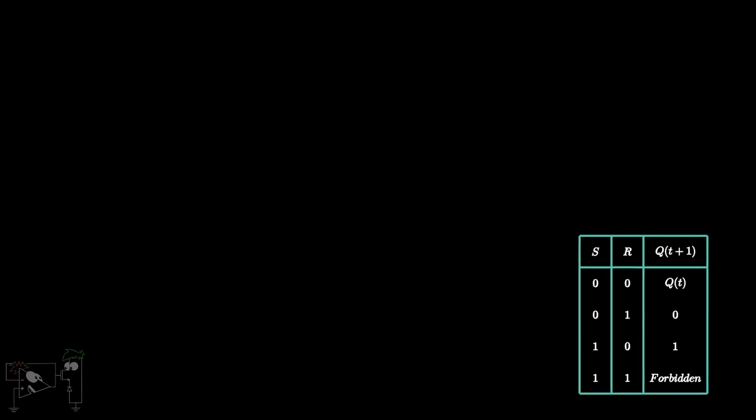Now let's see the effect of the comparator outputs on the RS flip-flop. Consider for example that the voltage at the trigger pin is above 1 by 3 VCC, and the voltage at threshold pin is below 2 by 3 VCC. The output of comparator 2 will be low, meaning input S will be low.